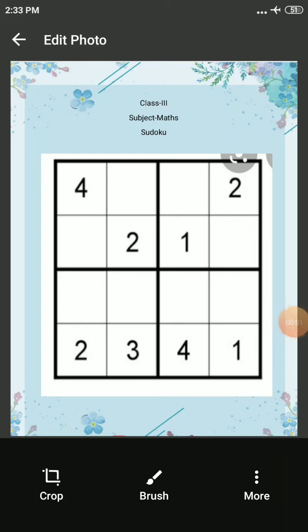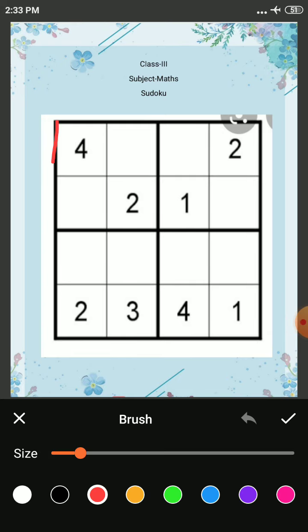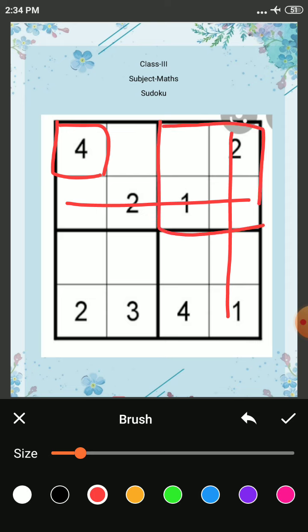Good morning kids. Today we will do the next level of Sudoku in which more numbers are missing. Rules are the same. This is called a cell, this is called a row, this is called a column, and this is called a block.